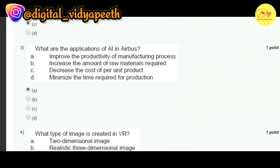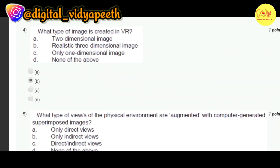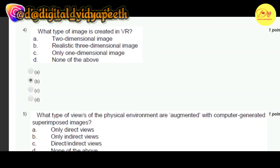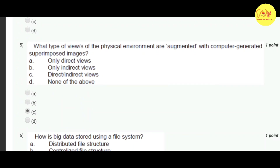Third question: what are the applications of AI in Airbus? Correct option is A — improve the productivity of the manufacturing process. Our fourth question: what type of image is created in VR? Correct option is B — realistic three-dimensional image. Next question: which type of view or views of the physical environment are augmented with computer-generated superimposed images? Correct option is C — direct or indirect views.